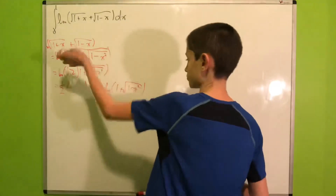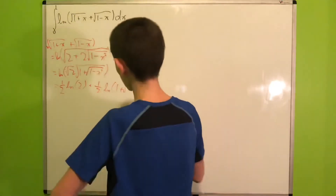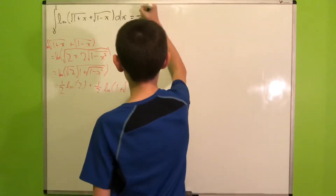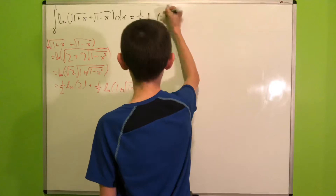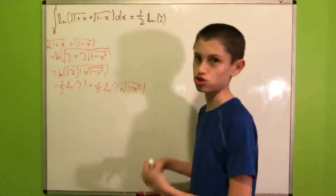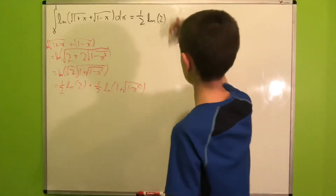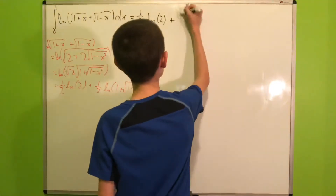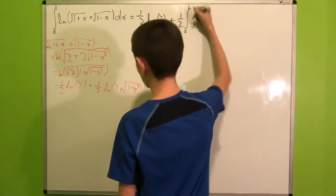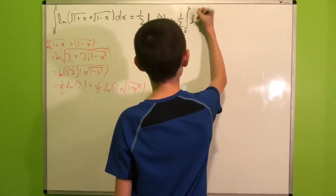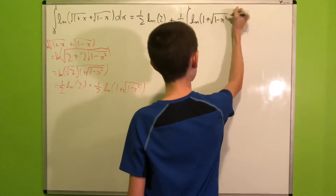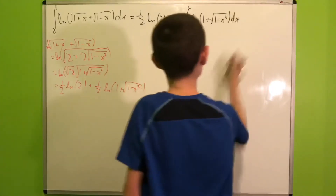Now we can plug this into our integral and split it into two smaller integrals. So we get 1 half natural log of 2 times the integral from 0 to 1 of 1 dx, which is just 1, plus 1 half integral from 0 to 1 of natural log of 1 plus the square root of 1 minus x squared dx.